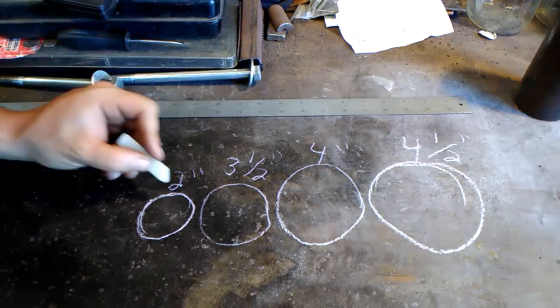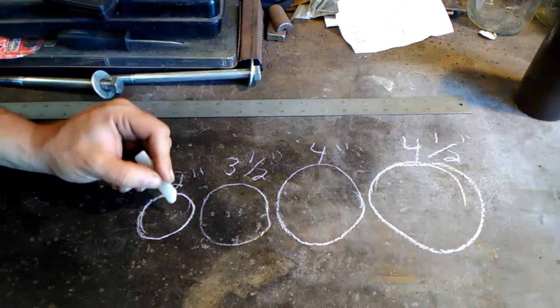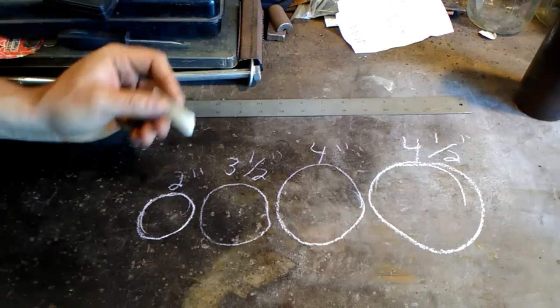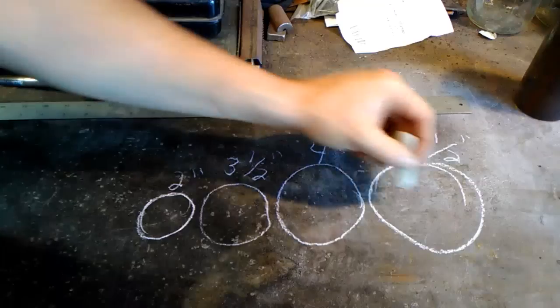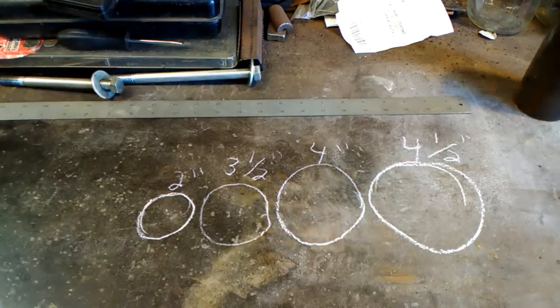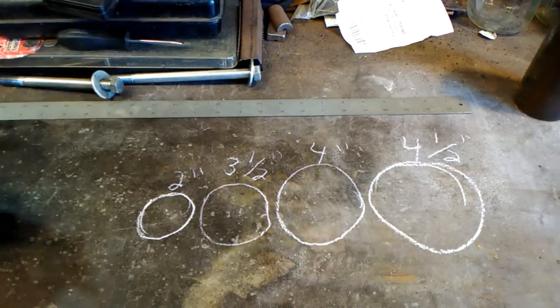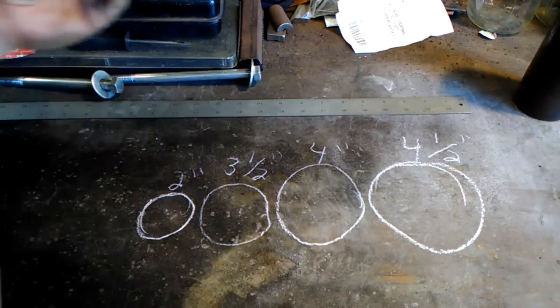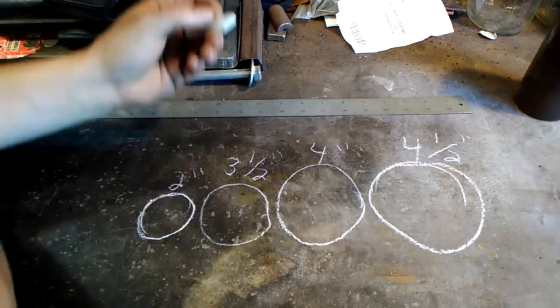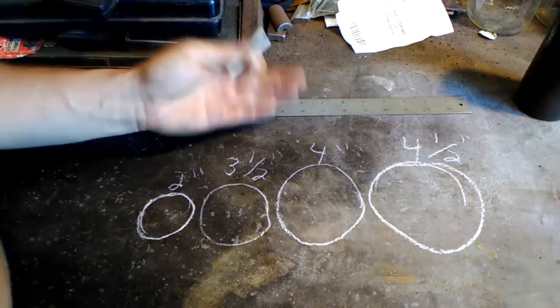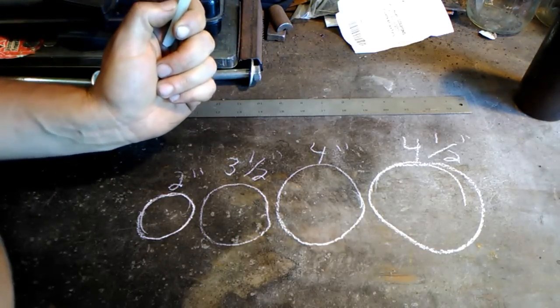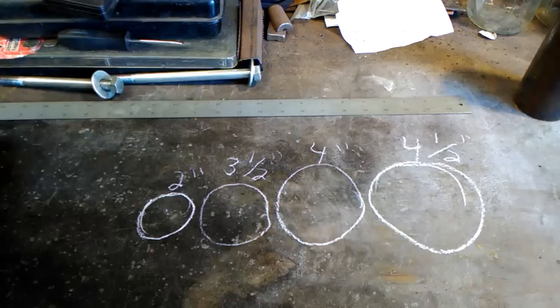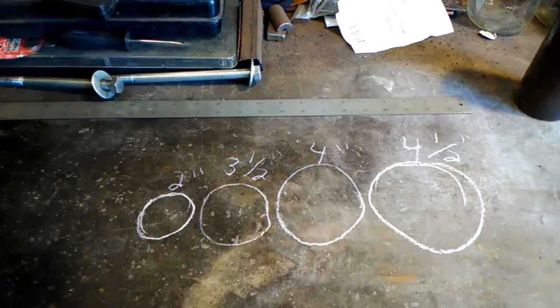We'll need the next size down from that, which will be three and one half inches. And then the final one, we'll need two at two inches. One of these is going to become the calyx and the other one's going to be the center portion of our rose. So there's the sizes that you guys are going to need for this job.